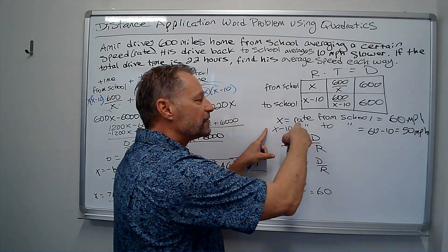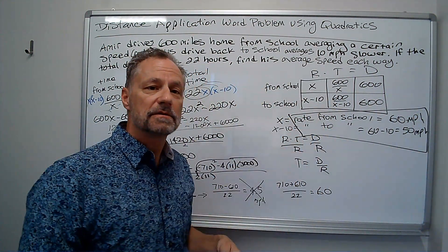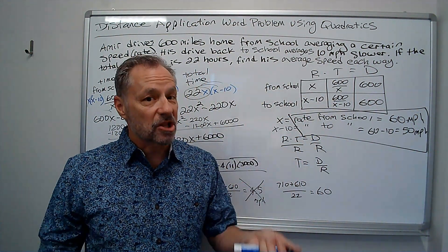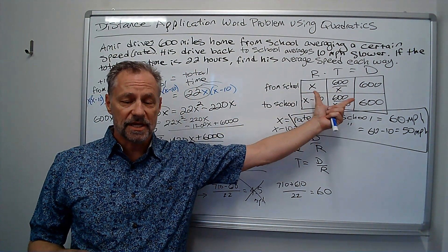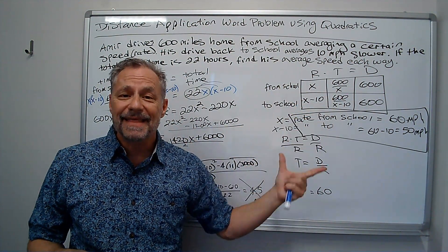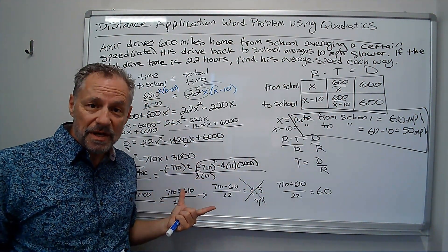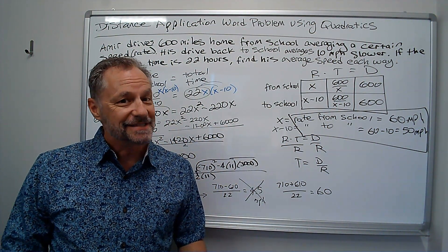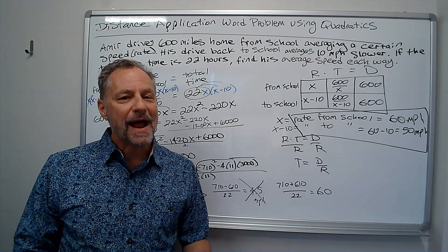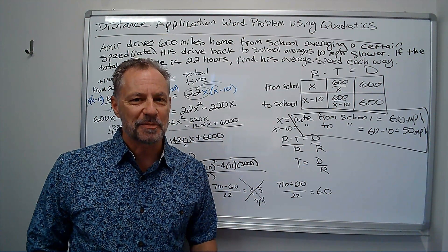So, the rate from school, 60. The rate back to school, 50 miles an hour. A lot going on there. I think the setup here is really going to help you out. Try that out. Use these. This one, not a nice one. Quadratic formula helps us get to the answer. But, I realize these take a little bit of work. Practice them. The more you do, the better you'll get. And, the quicker this will become.